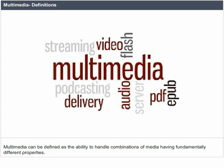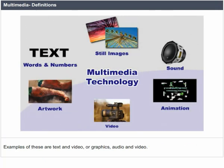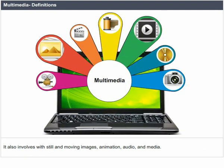Multimedia can be defined as the ability to handle combinations of media having fundamentally different properties. Examples of these are text and video, or graphics, audio and video. It also involves still and moving images and animation.